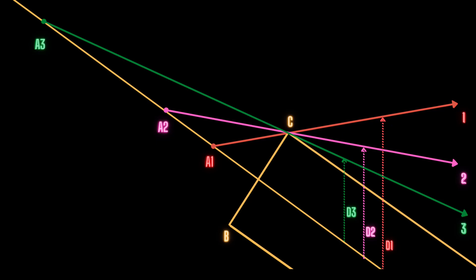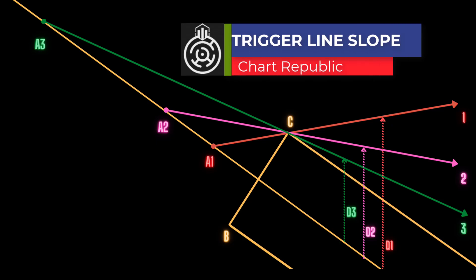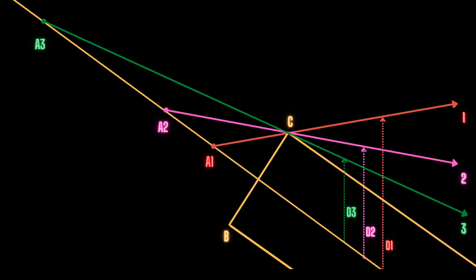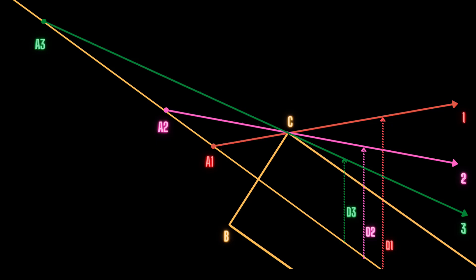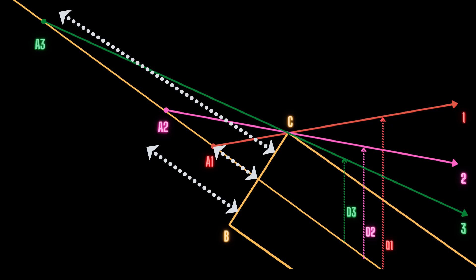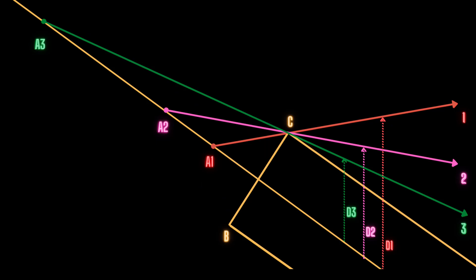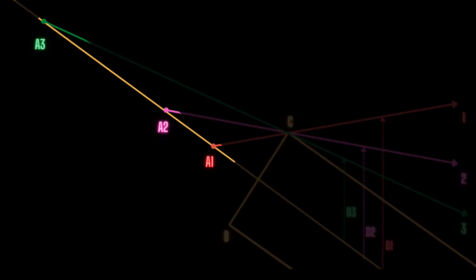One of the essential matters to consider when trading a trigger line breakout is the slope of this line. The trigger line is drawn by connecting pivot points A to B or C. The closer the distance between these points, the smaller the slope of the trigger line, and vice versa. In other words, it is the length of the pitchfork handle that determines the slope of the trigger line. A shorter handle creates a smoother slope, while a longer handle forms a steeper slope.